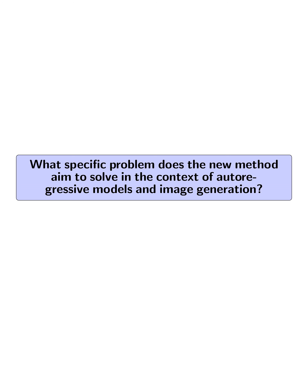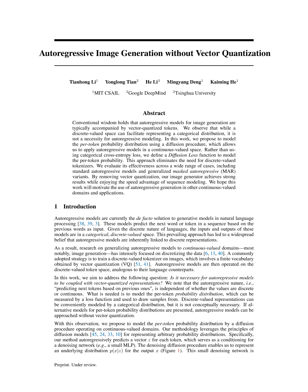The new method aims to solve the problem of the necessity of coupling autoregressive models with vector quantized representations in the context of image generation. The method proposes using a diffusion procedure operating on continuous-valued domains to model the per-token probability distribution, eliminating the need for discrete-valued tokenizers.